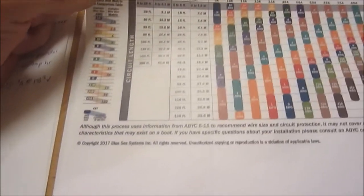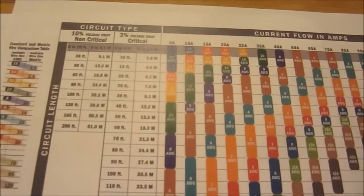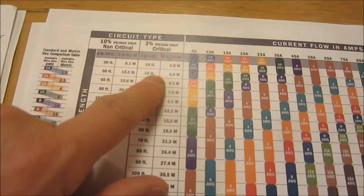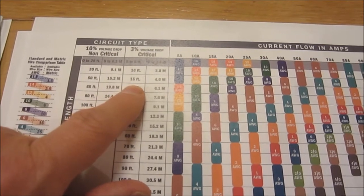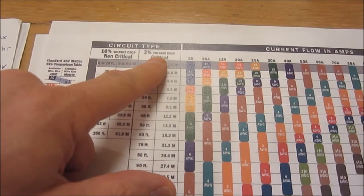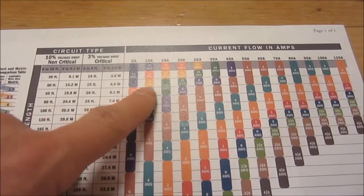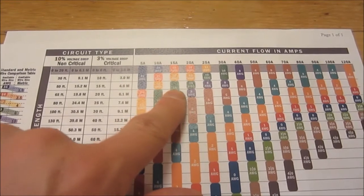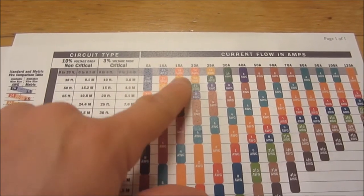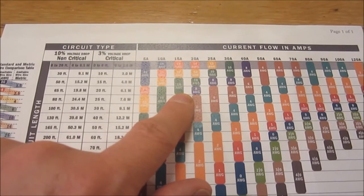I looked at the Blue Sea website and I found that 15 feet of wire with only a 3% voltage drop for my 15 amps, it says I'm pretty dang safe with that.